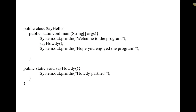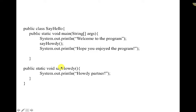So if we take this particular program, you'll see it's called SayHello, it has a public static void main which is our main method, and we print out a line 'welcome to the program.' Here we are calling sayHowdy, and sayHowdy is a method inside of the SayHello class. Whenever we make this call to this method, we come down here and run and do whatever is inside of sayHowdy. After this method is done running, it comes back up to where it was originally called and we continue on with our main program.